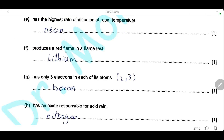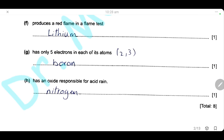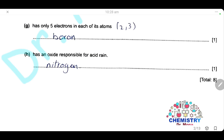The element that produces a red flame in the flame test is lithium. The element with only 5 electrons in each atom has the electronic distribution 2, 3 — that's boron. The element whose oxide is responsible for acid rain is nitrogen, which forms nitrogen dioxide, contributing to acid rain.